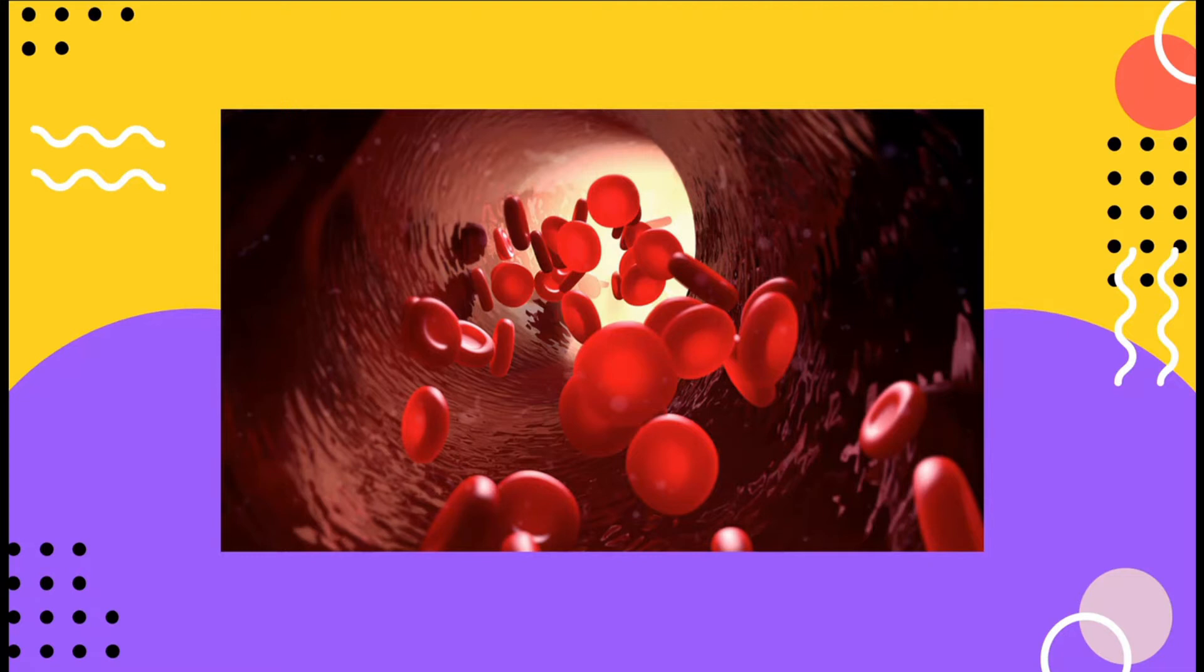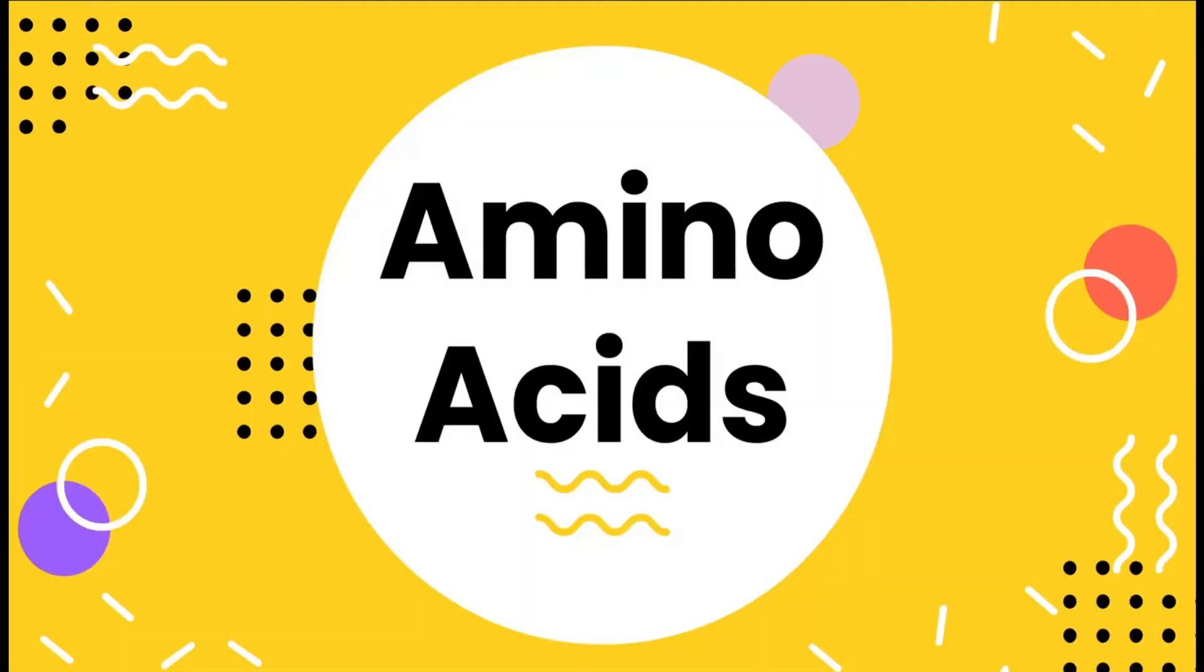There are many types of proteins with many different functions, but they are all made from the same building blocks which we call amino acids. Regardless of the origin of the proteins or their biological function, they are all polymers made of amino acids chemically bound to each other.